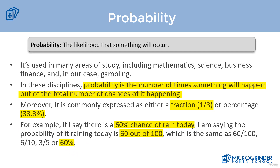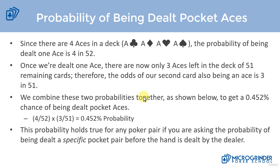That's probability, and the reason we want to talk about it is because it's important when it comes to poker and specifically poker mathematics and the probability of something occurring. Let's take a look at a simple probability — the probability of being dealt pocket aces. We can determine this with just some basic mathematics. We all know that in a deck of cards, there are going to be four aces, one for each suit.